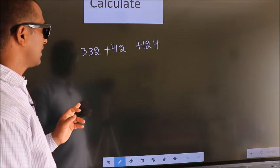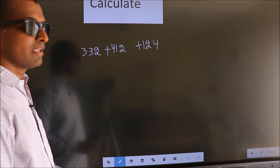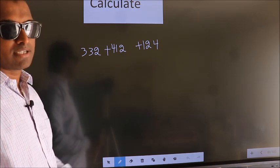Calculate 332 plus 412 plus 124. How do we add faster?